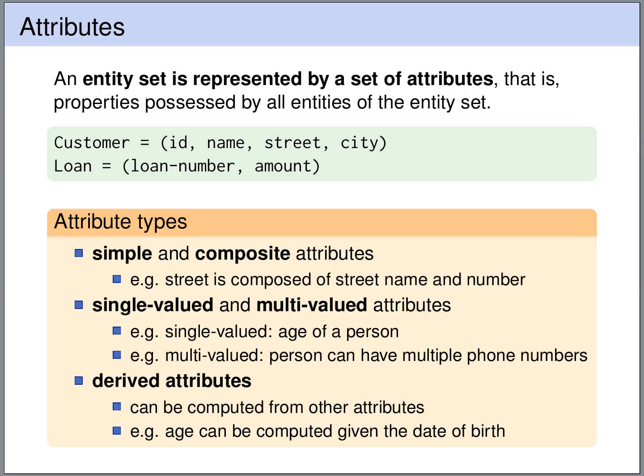We have simple and composite attributes. A composite attribute is composed of many other attributes — for example, a street is composed of the street name and the number. We can have single-valued and multi-valued attributes. The age of a person is a single-valued attribute; a person has only one age. The phone numbers of a person are a multi-valued attribute; a person can have many phone numbers. We can also have derived attributes — those can be computed from other attributes. For instance, the age can be computed from the date of birth.